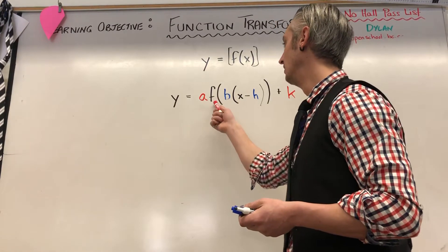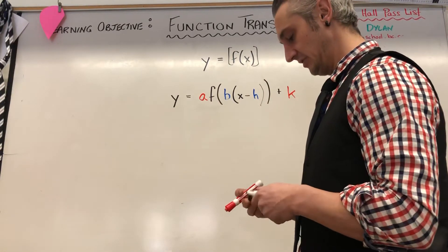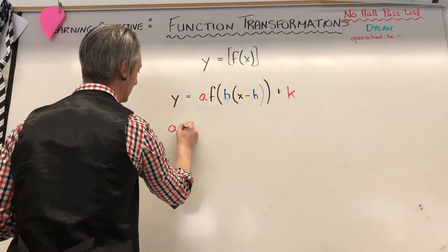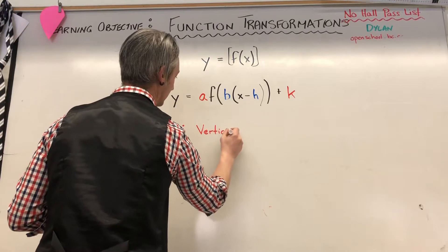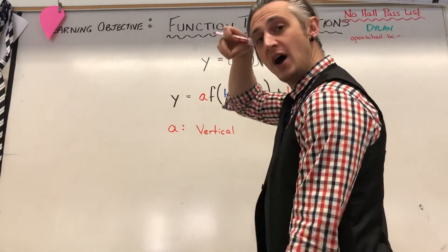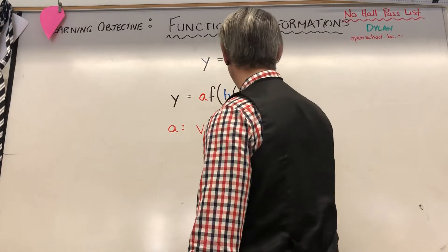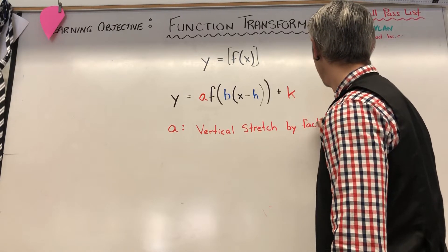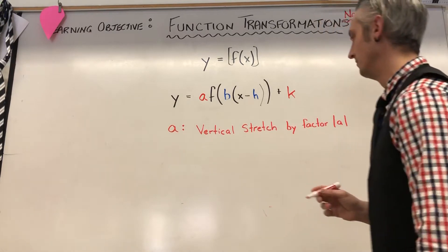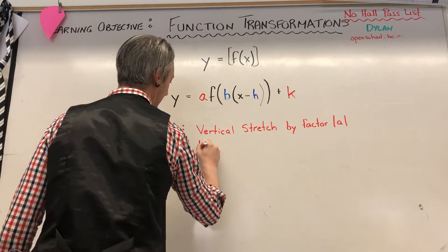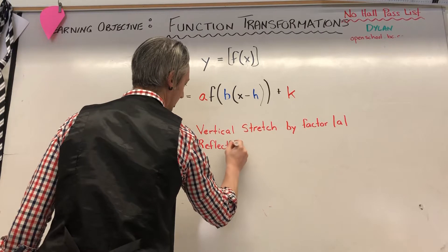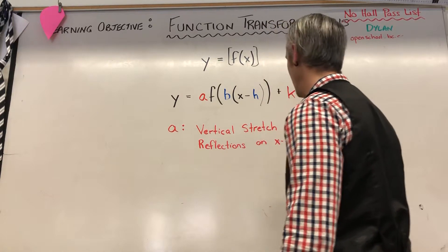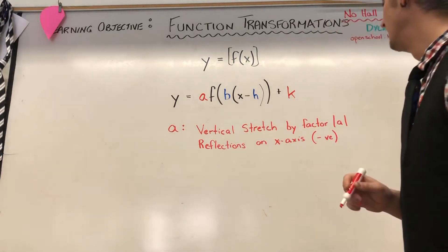What do each of these things do? Well, 'a' is going to be my vertical stretch — it causes stretching along the y-axis, and the stretch is by a factor of the absolute value of a. The parameter 'a' also controls reflections across the x-axis, and that happens when a is negative. So any time a is negative, we're going to have a reflection on the x-axis.